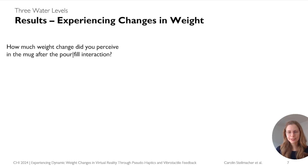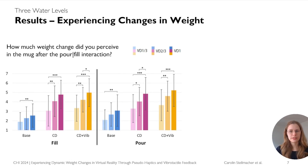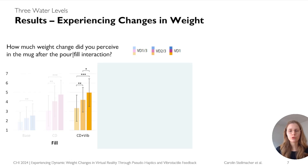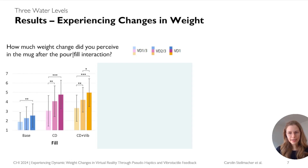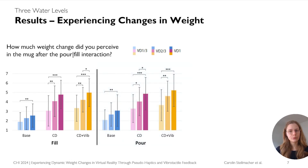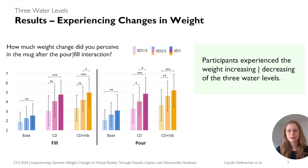Participants showed significant differences in Likert scale ratings between different water levels regarding the perceived extent of weight change. For example, filling a mug to the maximum received significantly higher ratings than filling it two-thirds or one-third in the weight techniques. A similar but slightly weaker staircase effect is also visible in the ratings of the other two conditions, and we can make similar observations in the pour interaction. From this, we can learn that participants did perceive an increase or decrease in weight during both interactions and were able to differentiate weight changes to different extents.